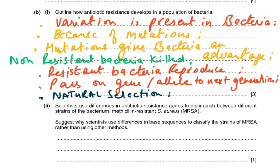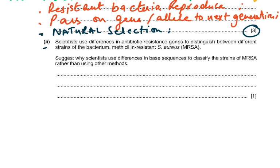So to outline how antibiotic resistance develops: first, variation is present in the bacteria because their DNA is different, due to mutations. The mutation gives bacteria an advantage. Non-resistant bacteria are killed; resistant bacteria survive and reproduce, passing on the gene or allele for resistance to the next generation. This is a form of natural selection. You need to give any three points out of these to score three out of three.